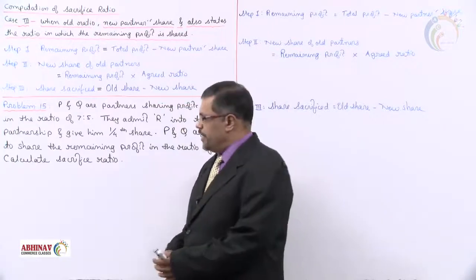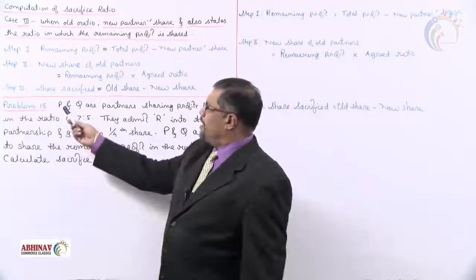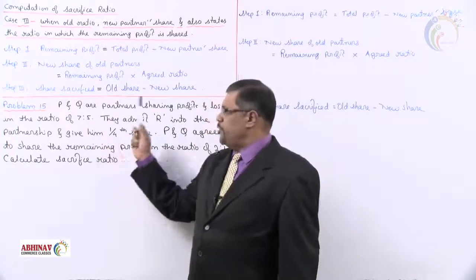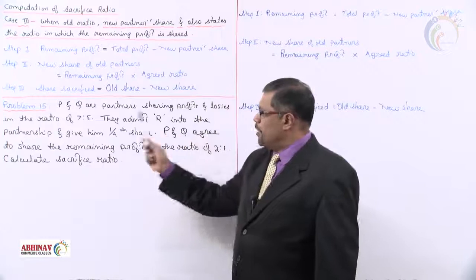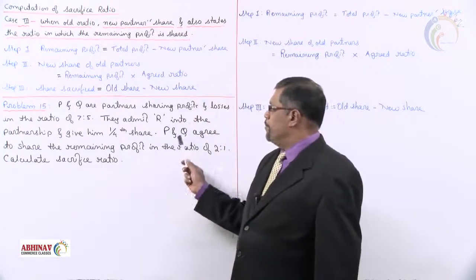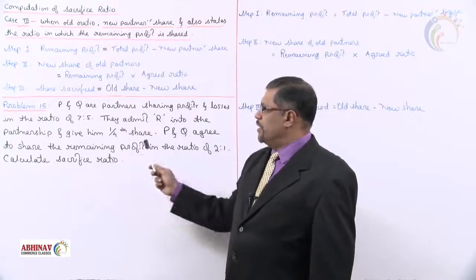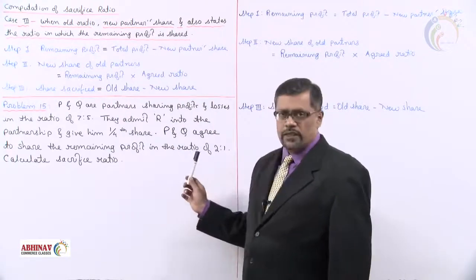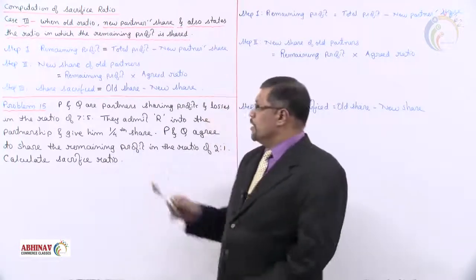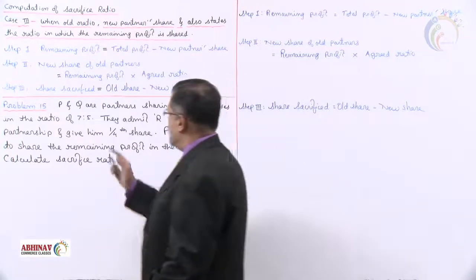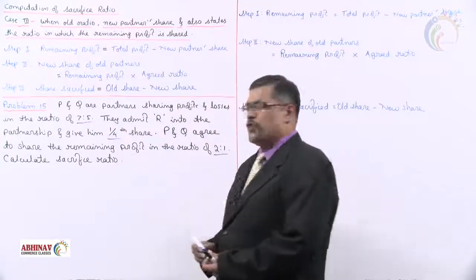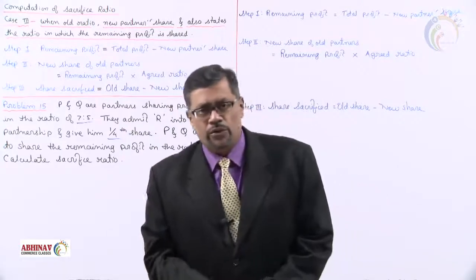Let us see Problem 15. P and Q are partners sharing profits and losses in the ratio of 7:5 (old ratio). They admit R into the partnership and give him one-fourth share. P and Q agree to share the remaining profit in the ratio of 2:1. Calculate the sacrifice ratio. Old ratio: 7:5, new partner's share: 1/4, agreed ratio: 2:1.